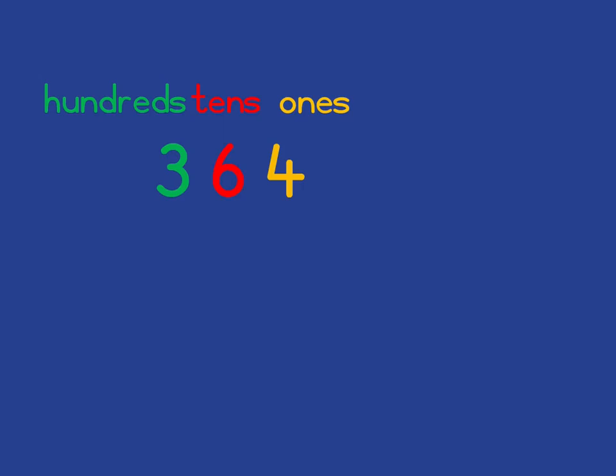And so this is how our place value system works, where any of our numbers are made up of digits and the value that the digit takes on depends on where it is in its place value. So for example, 4 just stands for 4 ones. Here the 6, because of where it is, stands for 6 tens. And the 3, because of where it is, stands for 3 hundreds. The place values, if you move from the right going left, each place value is 10 times more than the previous one.